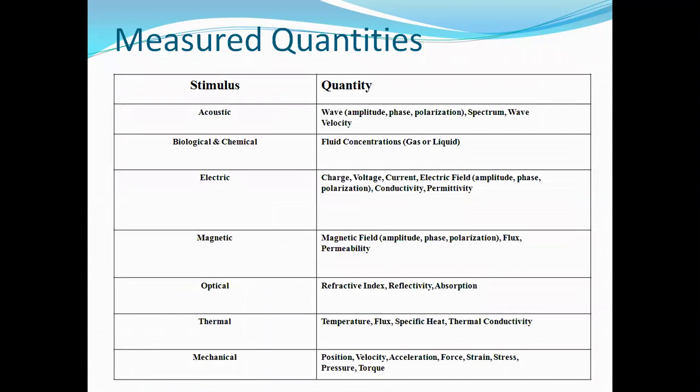Generally, what are the measuring quantities and what are the stimulus or measurements utilized to measure the quantity which is to be measured? Acoustic is nothing but the sound waves or the voice frequency variations that has been done at different levels and further the wave fluctuations will be monitored, amplitude, phase, polarization, the parts of the wave fluctuations, spectrums and wave velocity.